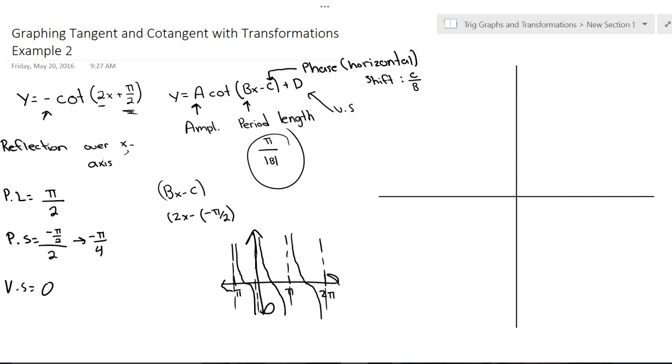So, that's our normal tangent graph. And then, the first thing we need to do is reflection over x-axis. So, what that's going to do is instead of going down like it is there, it's now going to be reflected and it's going to start going up.